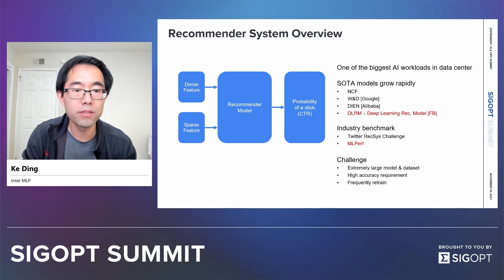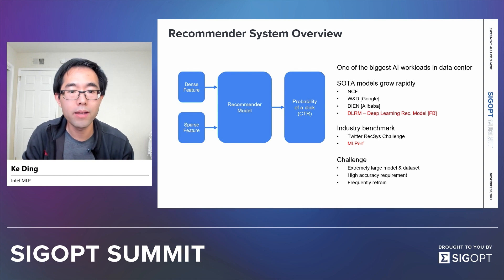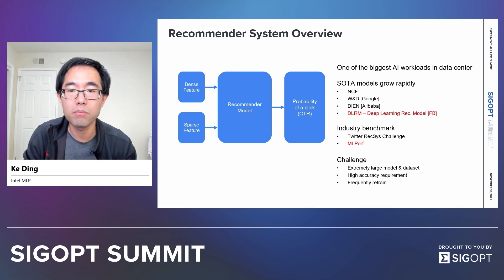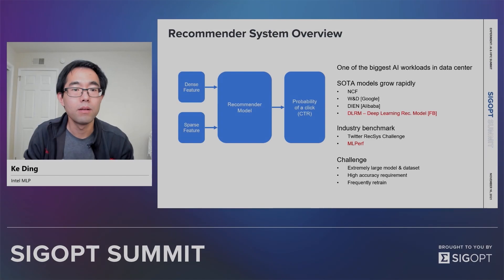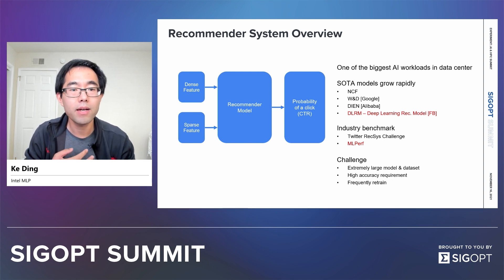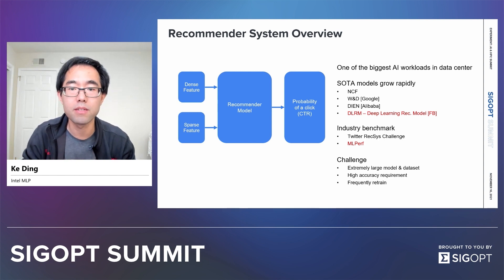You can imagine why it's so important to build the best recommendation systems in order to generate the best business values. Hyperscalers and many other enterprise customers are working very hard in this domain. Recommendation systems are so important, yet there are many technical challenges to solve. Every accuracy improvement directly translates into business value.